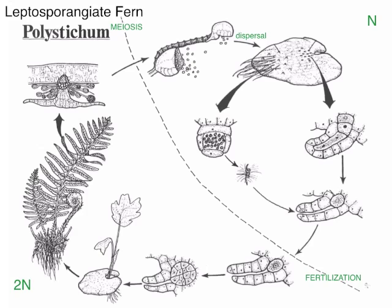Hello students, this is Non-flowering Plants, and today we're going to go over the life cycle of a Leptosporangiate fern. The Leptosporangiate ferns are the most diverse group of plants that we call Pteridophytes.